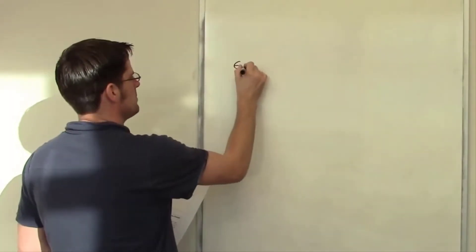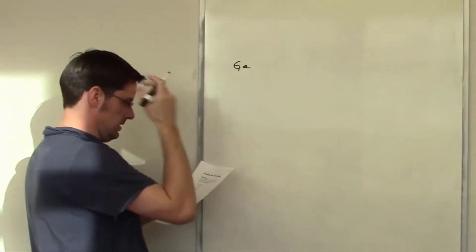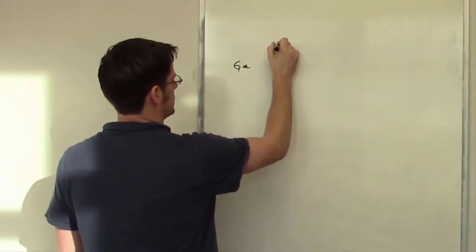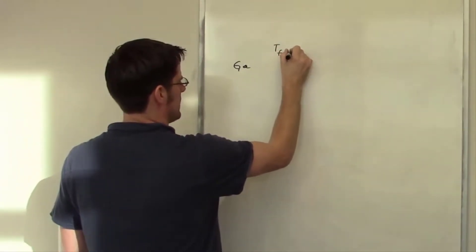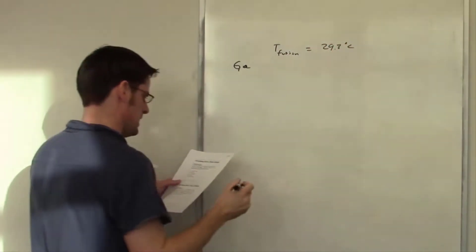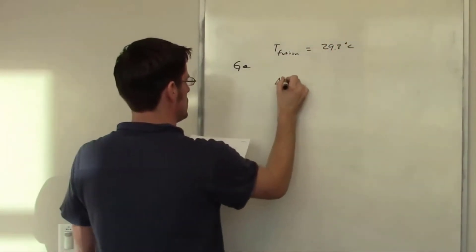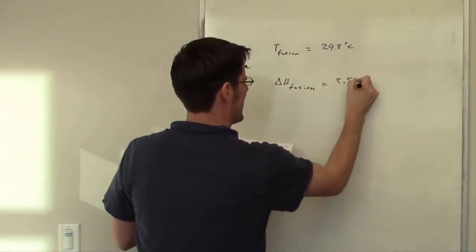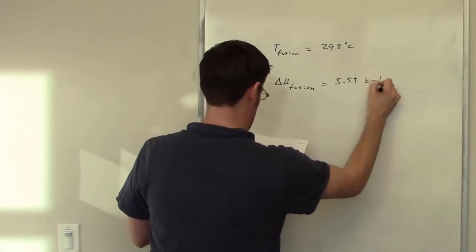In this problem we have gallium that has a freezing temperature or temperature of fusion equal to 29.8 degrees Celsius and it has a molar enthalpy of fusion, delta H fusion, of 5.59 kilojoules per mole.